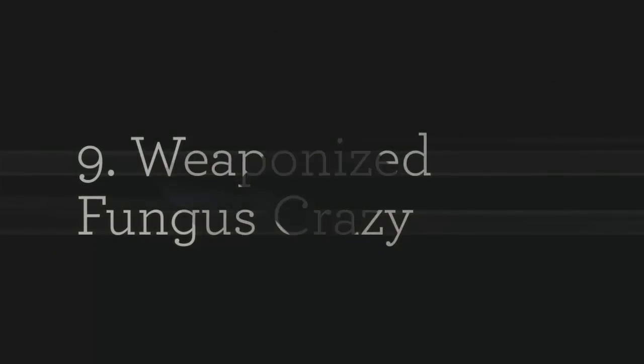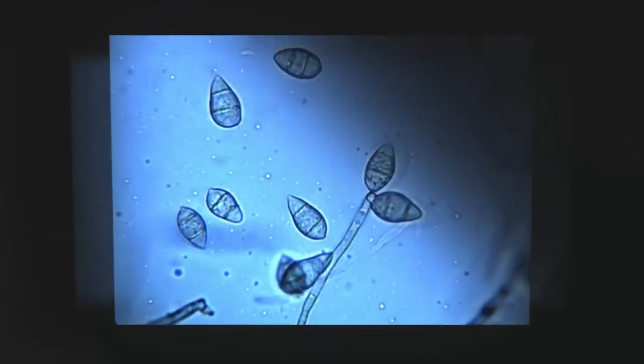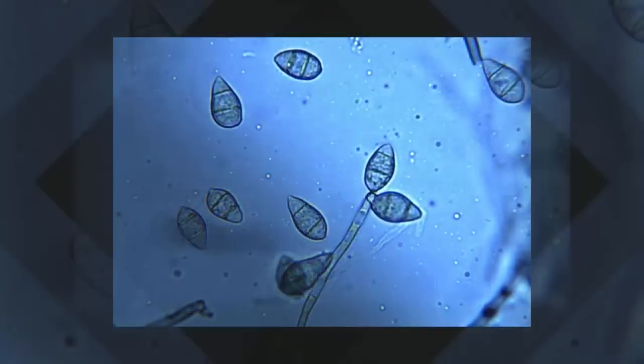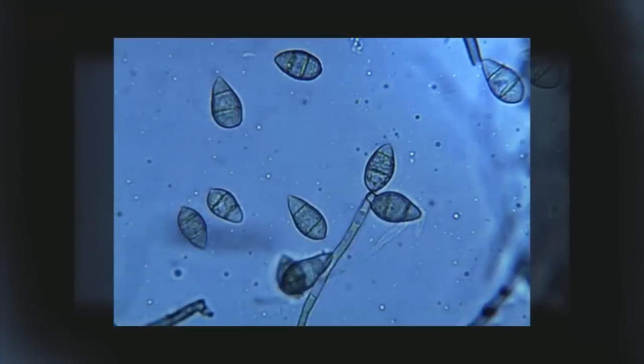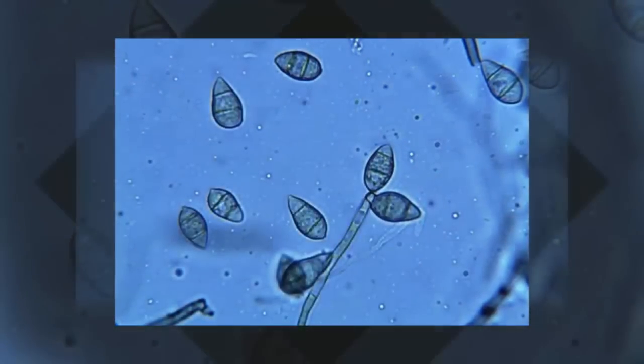9. Weaponized Fungus. Magnoporth grisaea is a fungus that affects two of the world's biggest crops, rice and wheat. Highly contagious, it can spread through an entire field overnight.